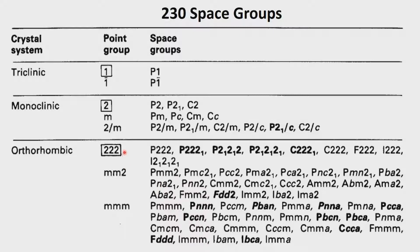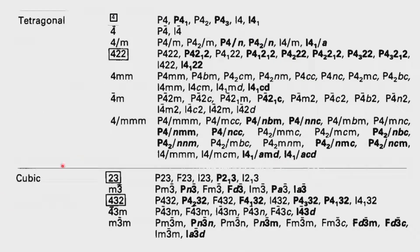In the orthorhombic system, all possible lattices are present: P, C, F, and I. All these lattices except the C lattice are generated in the cubic system, so P, F, and I are allowed in a cube. The only condition is that the threefold symmetry, which is a basic symmetry in a cubic system, appears along the 1 1 1 direction.